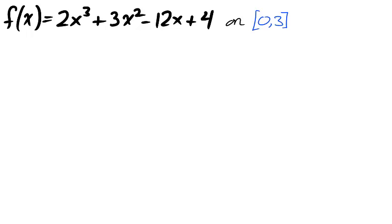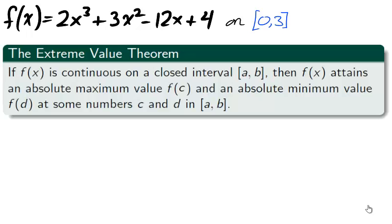Take for example the polynomial f defined on the closed interval [0,3]. As polynomials are always continuous, and we are on a closed interval, the extreme value theorem guarantees an absolute maximum and minimum value in the interval [0,3].